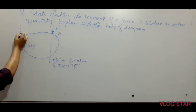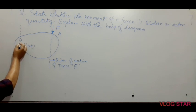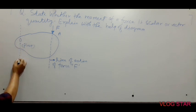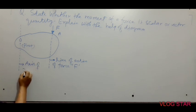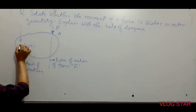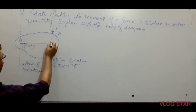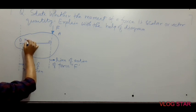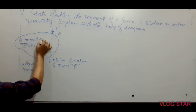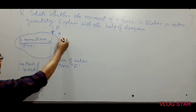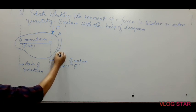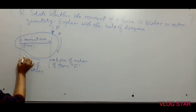Now we will draw a line passing through the pivot O, and this line is called the axis of rotation. This perpendicular distance is called the moment arm. In this case, this force will have the tendency to rotate the rigid stationary body along this direction.